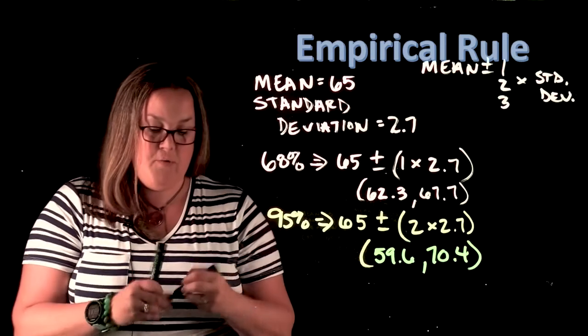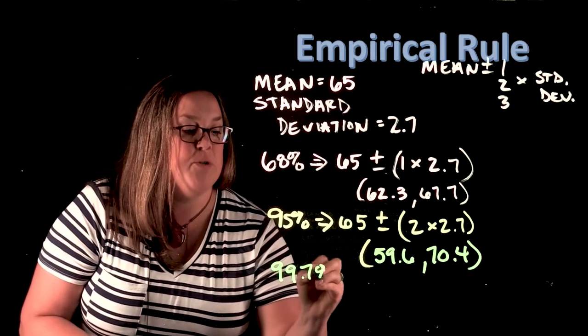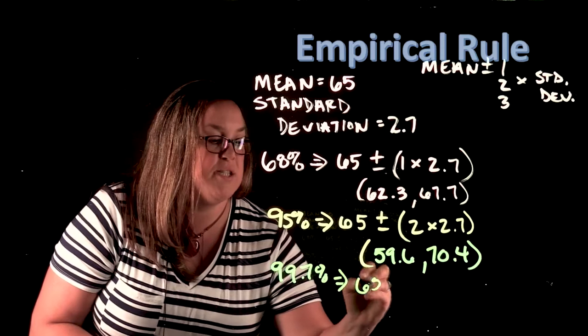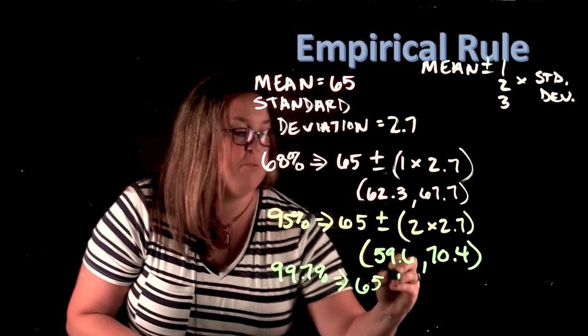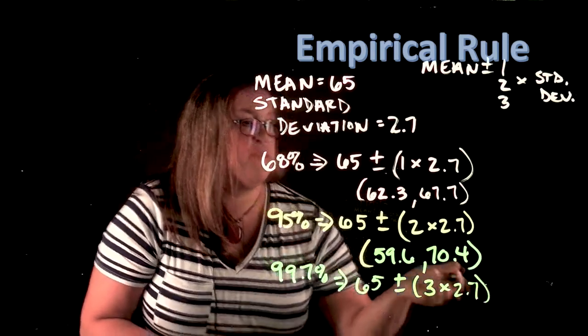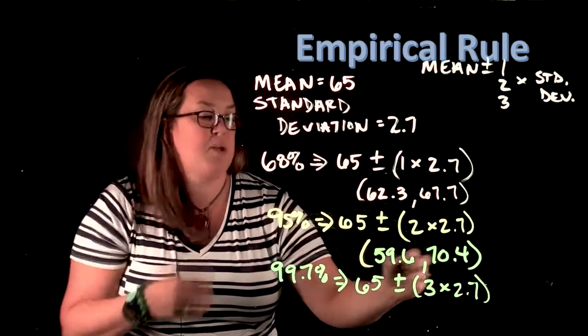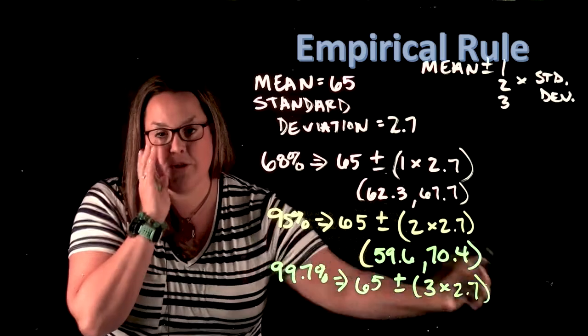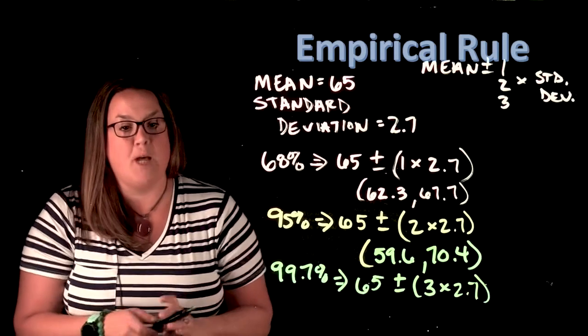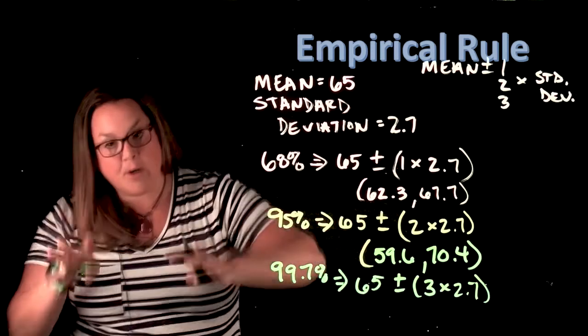And then the final one is 99.7%, and that's going to be 65—that's the mean—plus or minus three times the standard deviation. It's important to notice that you would put those in parentheses because of order of operations. You don't want to enter this all in your calculator at the same time, otherwise it wouldn't come out correctly. So we're doing that multiplication first, and then you add and subtract.